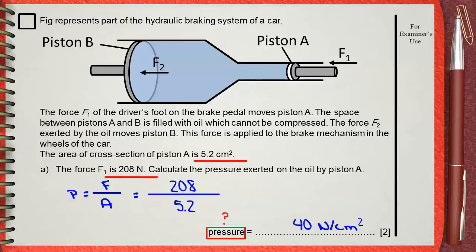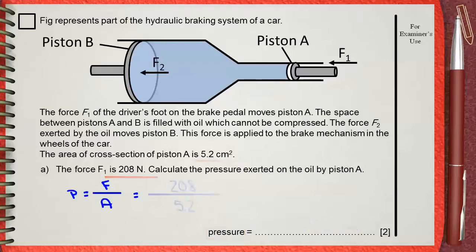The standard unit of area is m². So if you want to give the answer in Pascals, you must change 5.2 cm² to m². The answer of 40 N/cm² is correct, but you cannot express it in Pascals. So if you want the answer in Pascals, pressure equals force over area, and the force is 208 N — no conversion needed, since Newton is the standard unit of force.